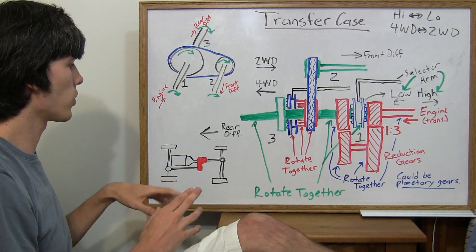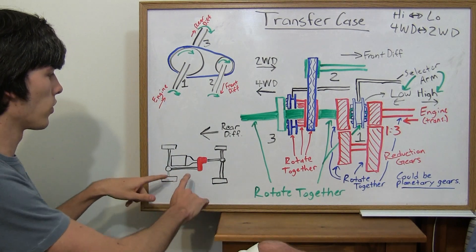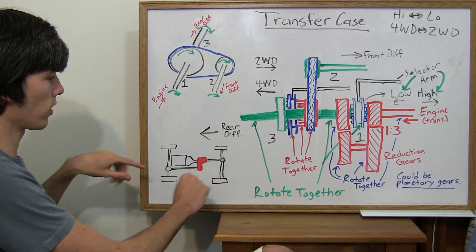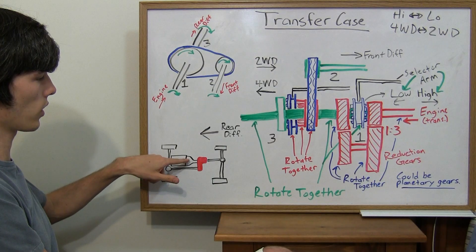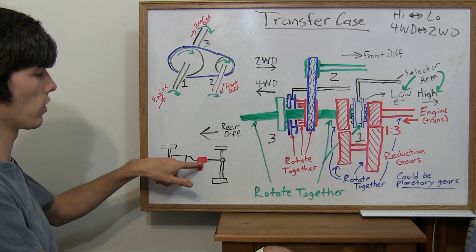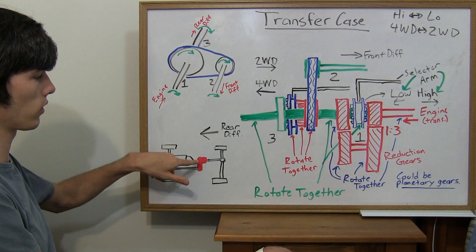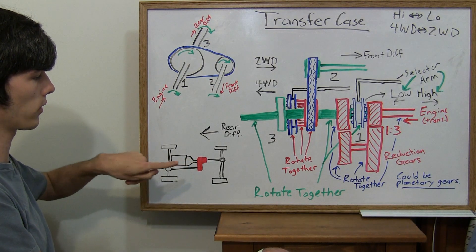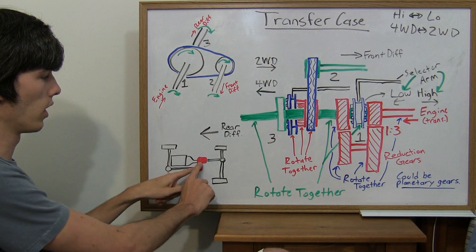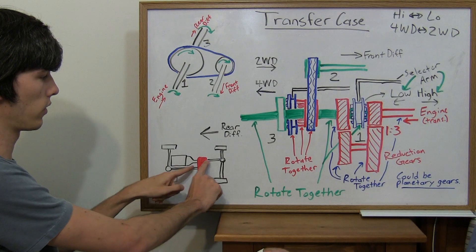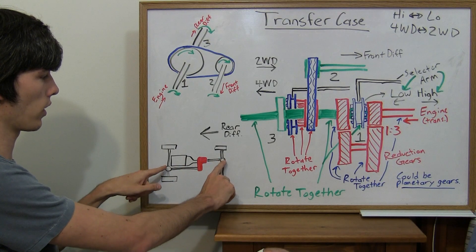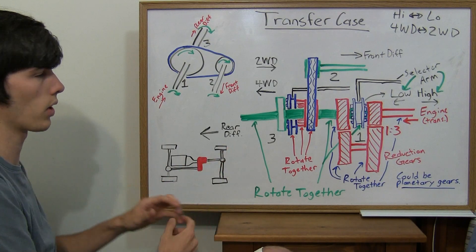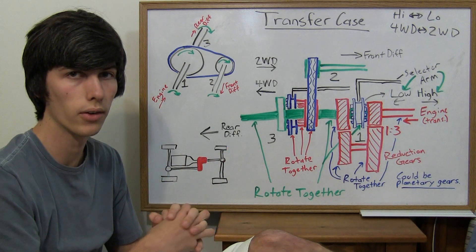So, transfer case. We're looking down on a car here. You've got your engine, your transmission, which feeds to the transfer case — this component right here — which feeds two drive shafts to the front and rear so that you drive all four tires.